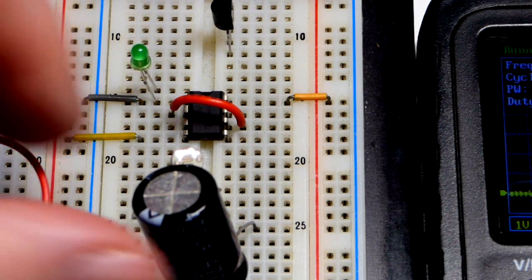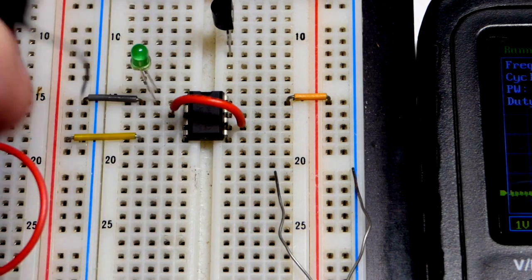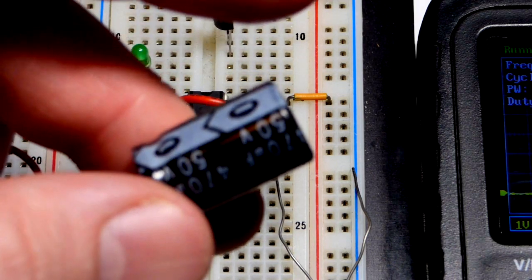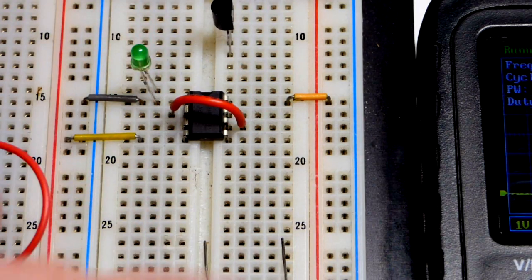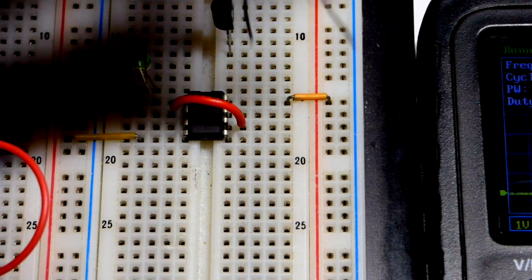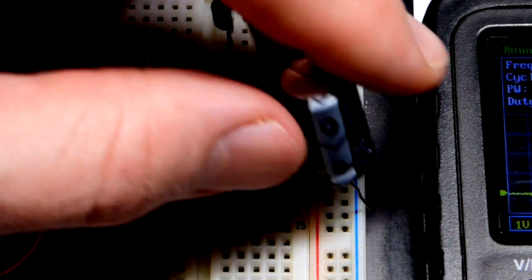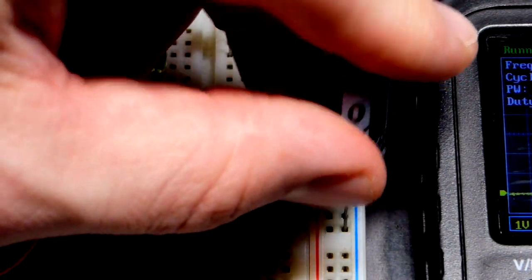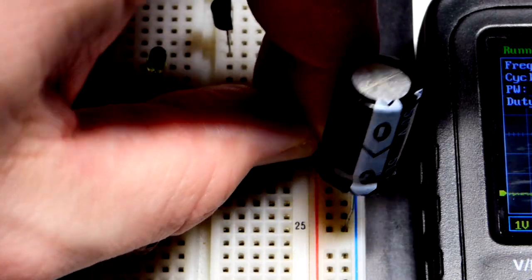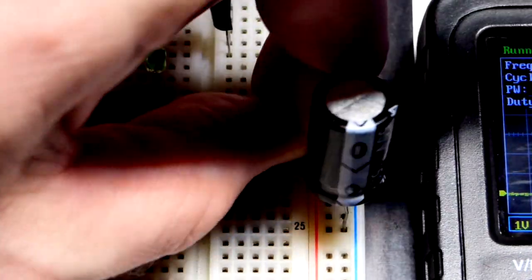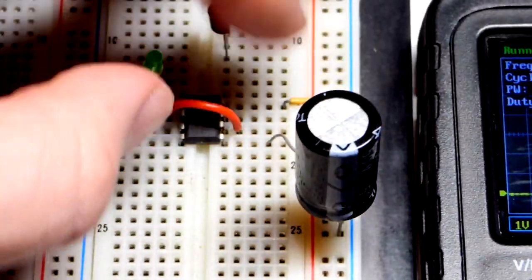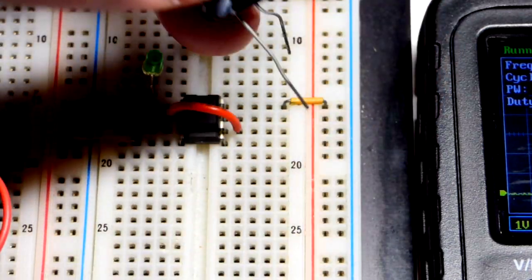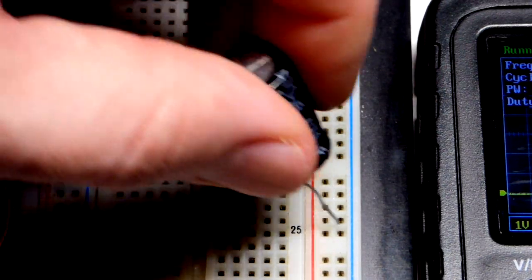And so we're actually going to feed the output to the capacitor. So I'll grab that right now. This is a 470 microfarad capacitor. Hopefully you can already tell what circuit I'm making based on the description. There we go. We'll go into there.